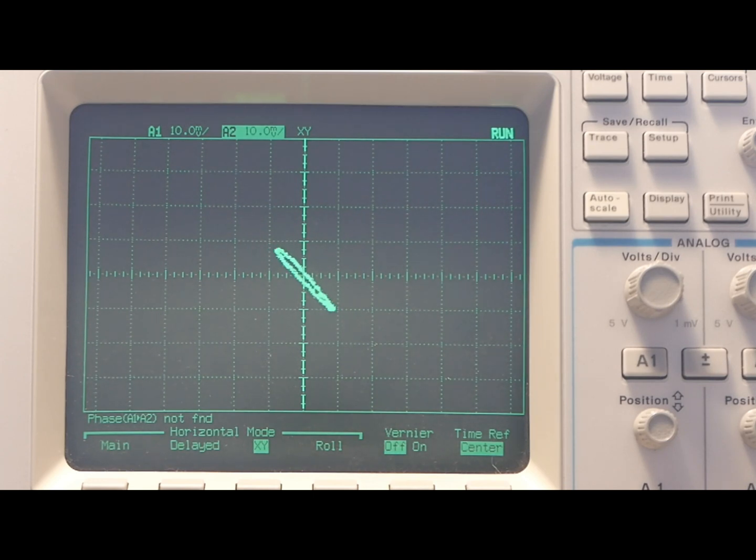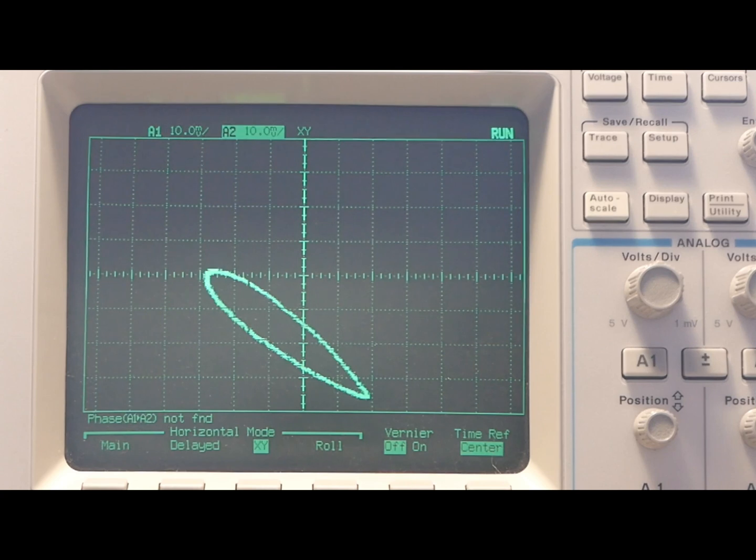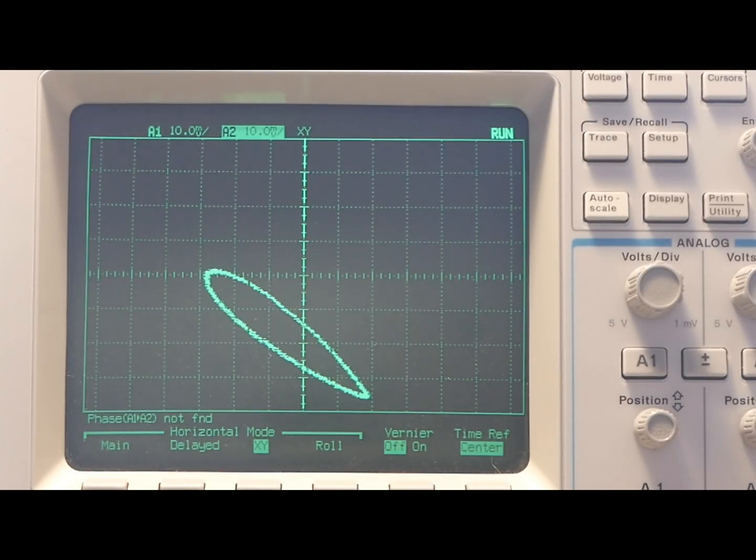So we're up to now 290 MHz. I'm going to increase the level again. Alright, so there's quite a significant loop now. So the balun is definitely struggling at this sort of frequency range.